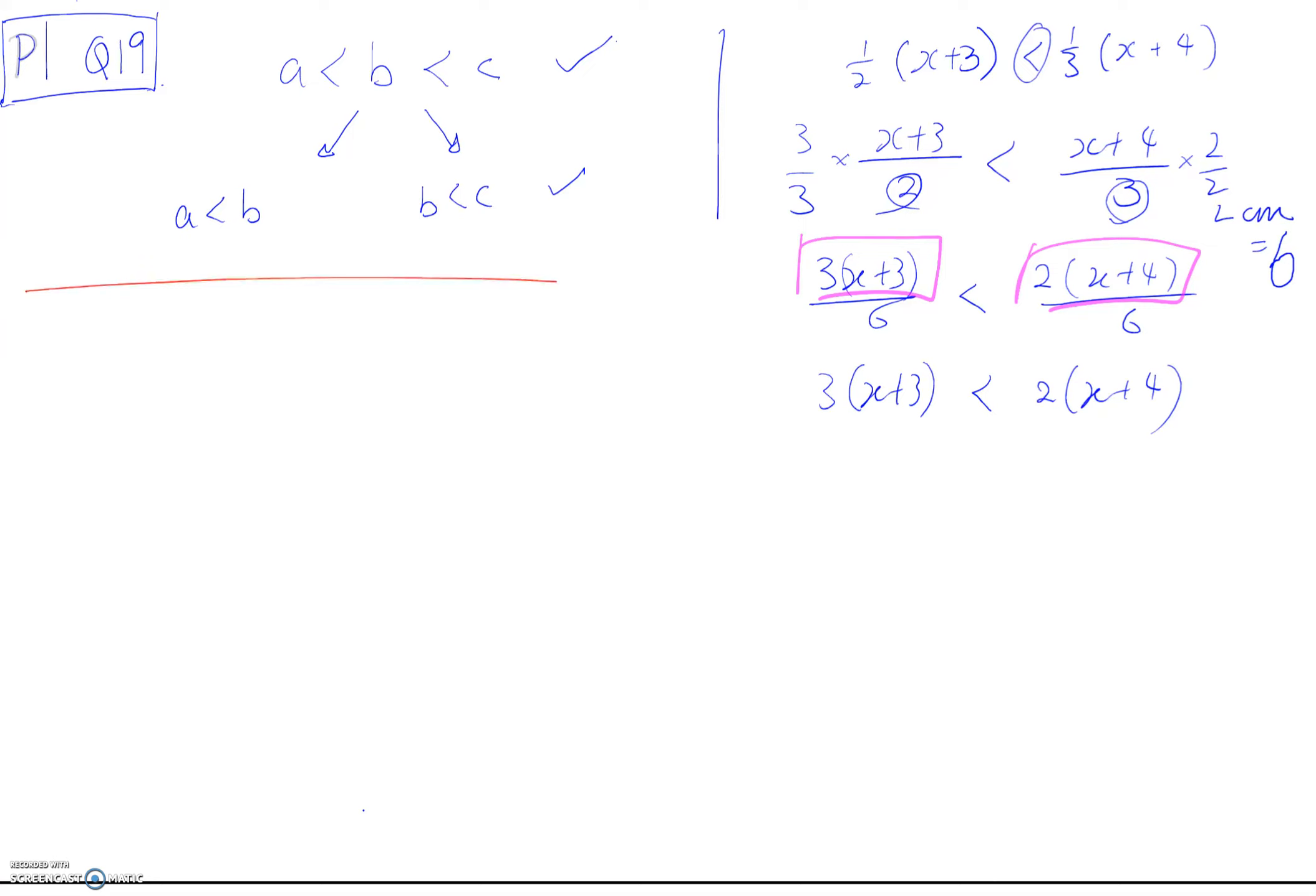If I change by multiplying or dividing by a negative number - the key word is negative number - I will need to change the sign. So this one becomes -x less than 2. If it's plus or minus you don't need to change, but if it's multiply or divide by negative number, I need to change the inequality sign.